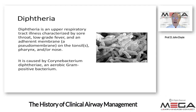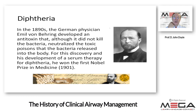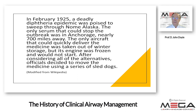One of the most interesting diseases impacting airway management is diphtheria — an upper airway tract illness characterized by sore throat, low-grade fever, and a pseudomembrane on the tonsils that can obstruct the airway. It is caused by Corynebacterium diphtheriae, an aerobic gram-positive bacterium. The membrane can grow and extend down the throat, suffocating the victim. In the 1890s, German physician Emil von Behring developed an antitoxin that, while not killing the bacteria, neutralized the toxic poisons they released. For this he won the first ever Nobel Prize in 1901.